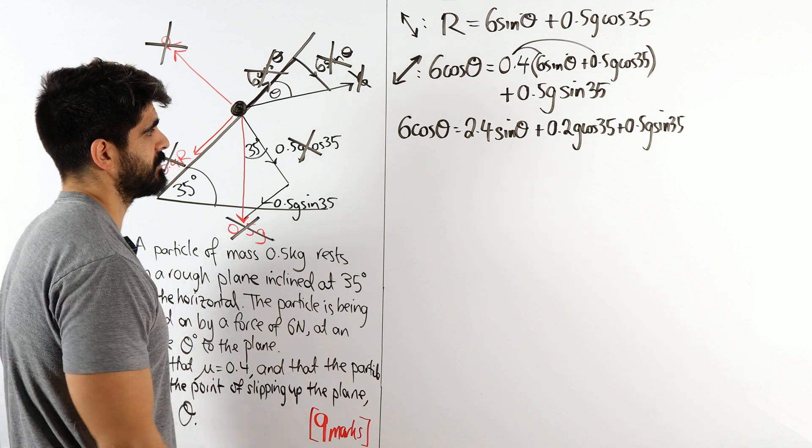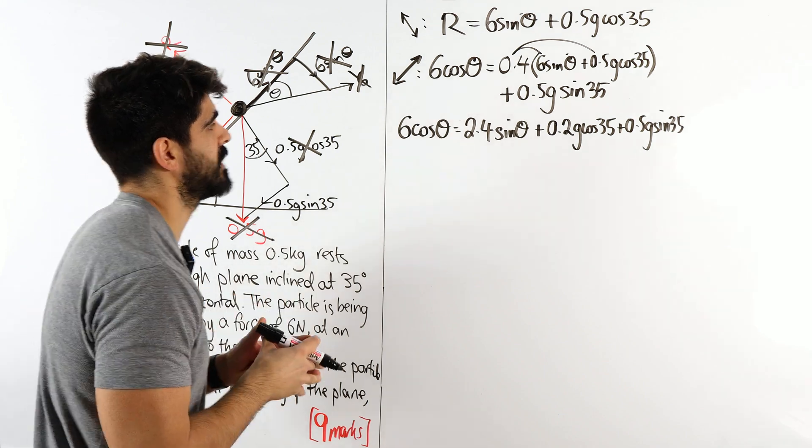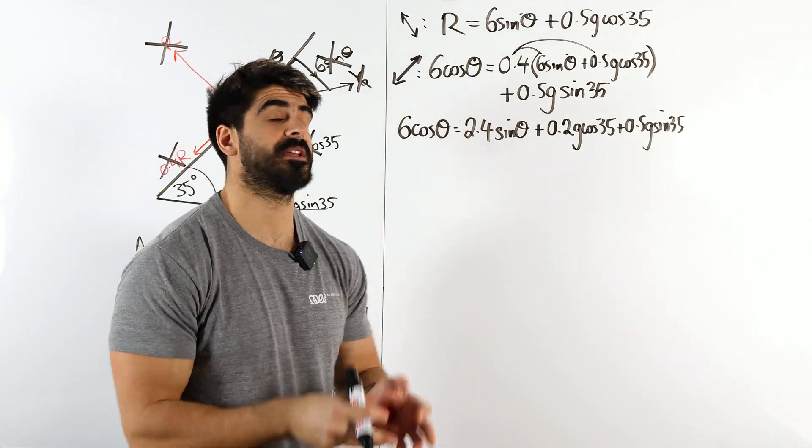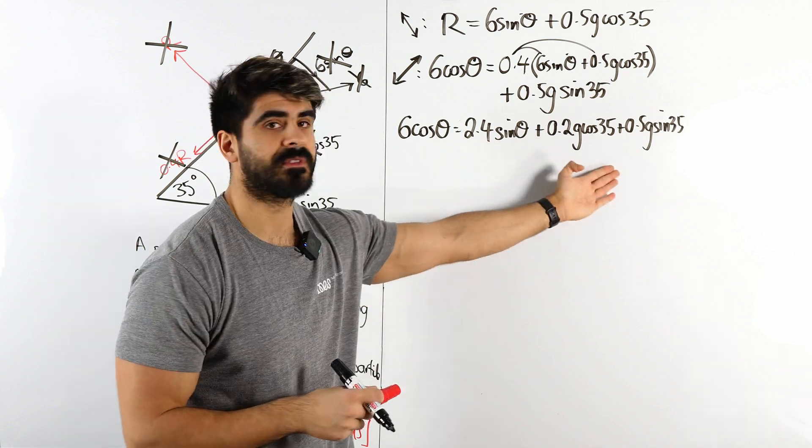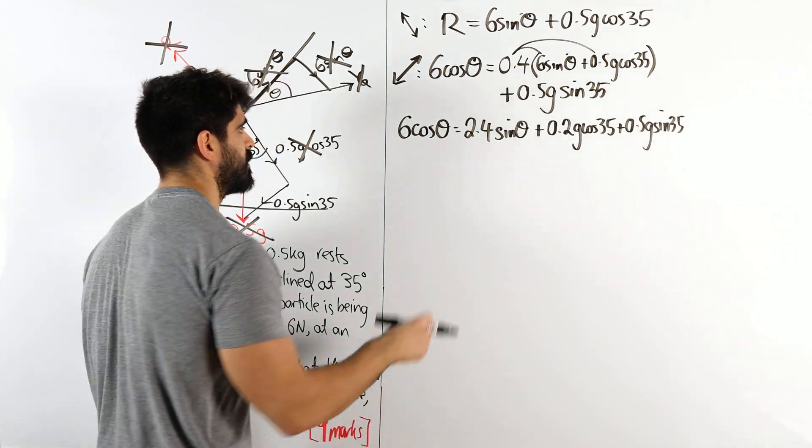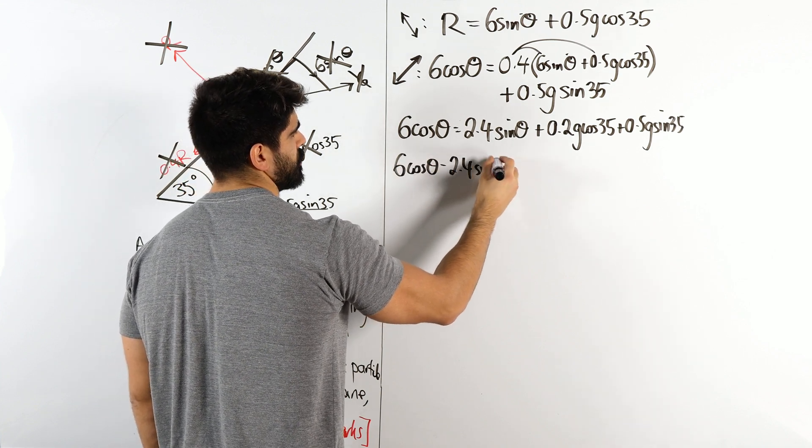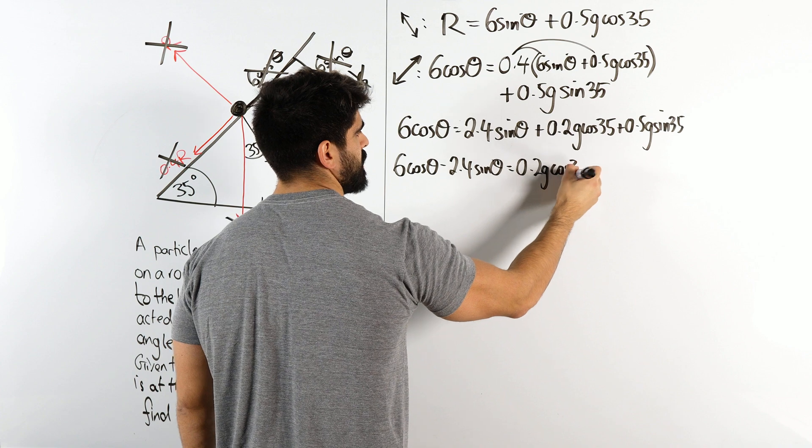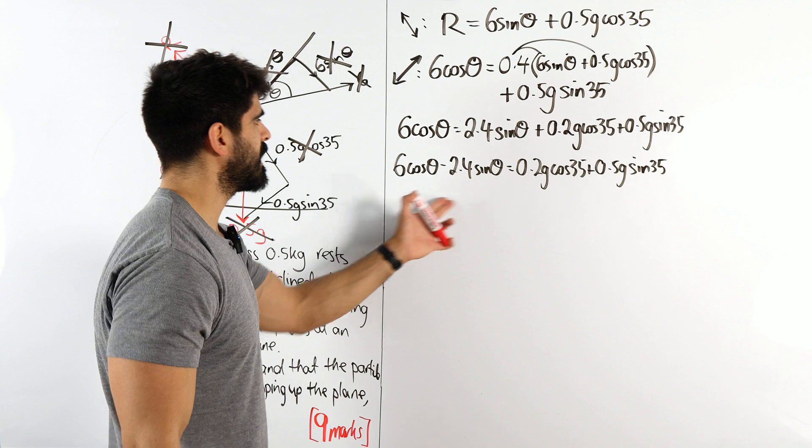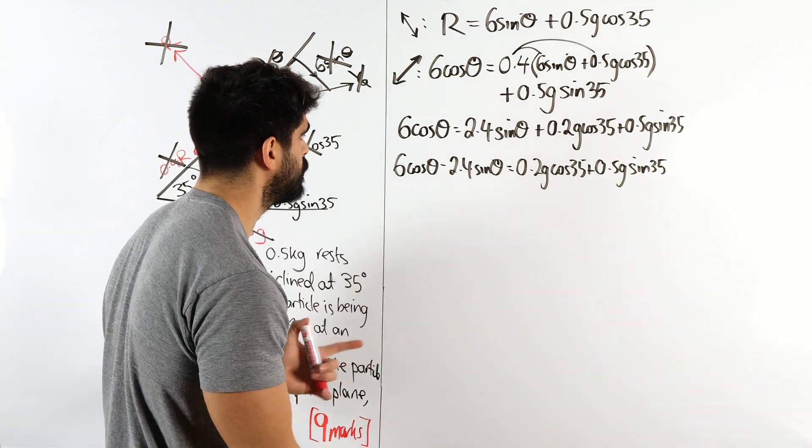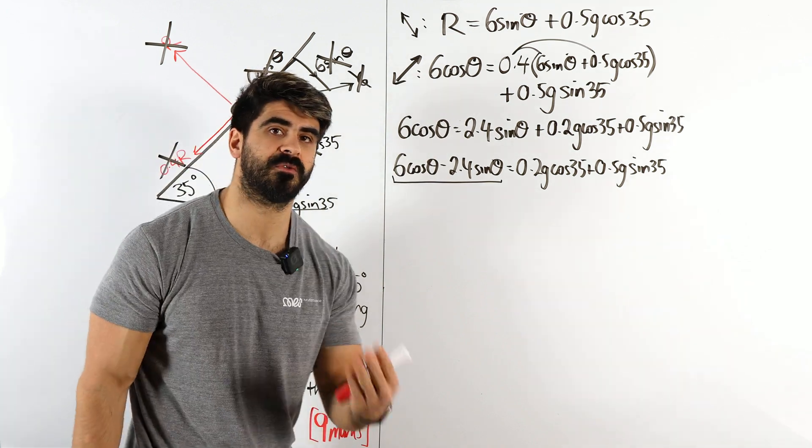How do we solve this? This is a bit of a sticky one, I can't lie. It looks like we need to bring everything, the sines and cosines to one side. So what students think we need to do here and it makes sense, we need to try and change it to tan, right? You can't do that here. Because when you bring this to this side, that's not zero. You can't just divide through by cos. So what we're going to do, I'm going to bring it to this side. So I get 6 cos theta minus 2.4 sin theta is 0.2g cos 35 plus 0.5g sin 35.